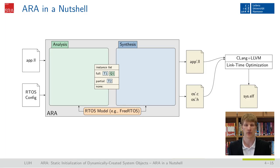The analysis phase takes the application source code as LLVM intermediate representation as input. Additionally, ARA takes the configuration of the used operating system and a model describing the semantics of the operating system and its system calls as input. ARA uses these inputs to analyze the application and generate the instance list, which describes the found operating system objects and their properties.